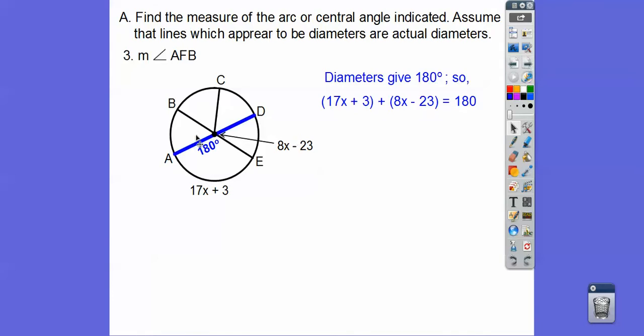So we know the diameters give 180. Now, look, if I can figure out this angle right here, these guys are vertical angles right there. So I'm going to plug it into this one and it's going to equal that one. So what I'm going to do is this arc plus this arc will give me this diameter, this semi-circle right here, or 180.